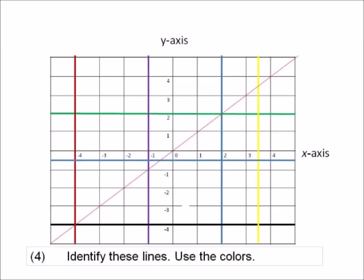Number four: identify these lines using the colors. We have lines that run across — the green, the black, and the blue. Up and down we have the red, the purple, the blue, and the yellow. There's also one that runs diagonally — the orange line. It's either x is equal to something or y is equal to something.